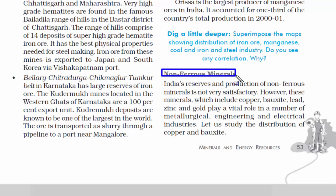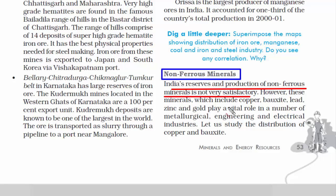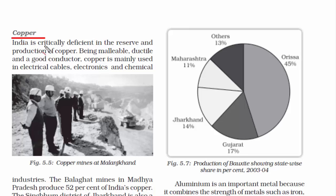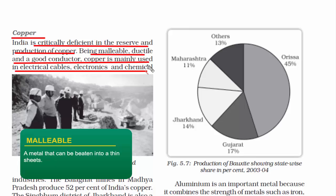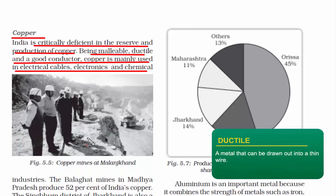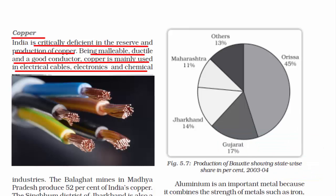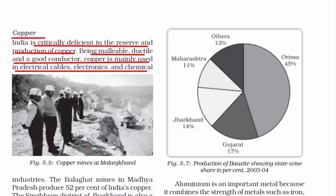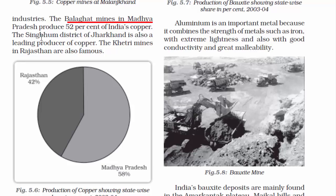We now move on to the second type of metallic mineral: non-ferrous minerals. In this category, you will not find iron. India doesn't have a high reserve of non-ferrous minerals. Some minerals that come under non-ferrous are copper, bauxite, lead, zinc, and gold. These are used in electrical and metallurgical industries. India does not have high reserves of copper; however, it is malleable, ductile, and a good conductor. Malleable means it can be beaten into thin sheets; ductile means it can be drawn into wires. Copper is mainly used in electrical cables, electronics, and chemical industries. Copper in India is found at Balaghat mines in Madhya Pradesh, Singhbhum district of Jharkhand, and Khetri mines in Rajasthan.